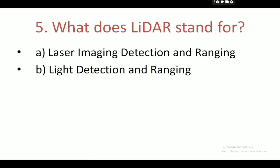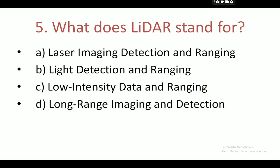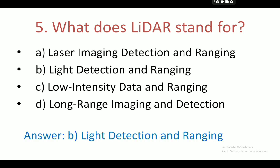Next question: what does LiDAR stand for? Option A is laser imaging detection and ranging, option B is light detection and ranging, C is low intensity data and ranging, and D is long range imaging and detection. Your correct answer is B — light detection and ranging.